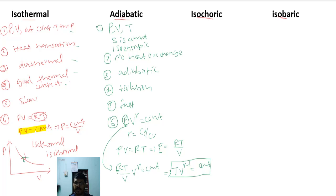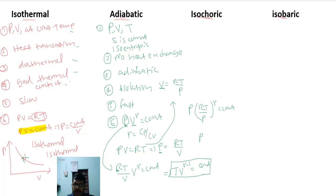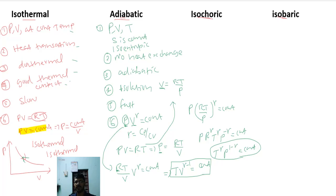Similarly, substituting volume V = RT/P into PV^gamma = constant and simplifying, we obtain T^gamma × P^(1−gamma) = constant. This is the third form of the equation of state for an adiabatic process, expressed in terms of temperature and pressure.